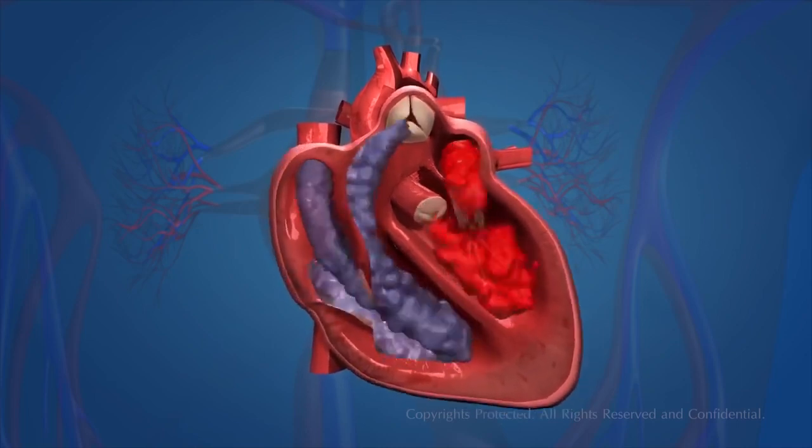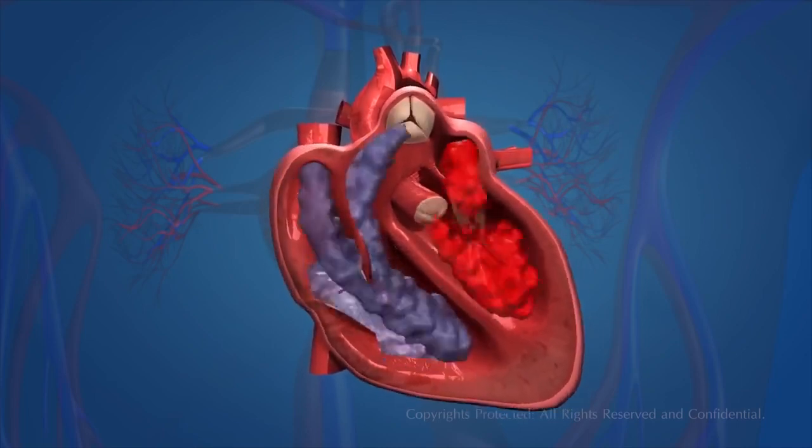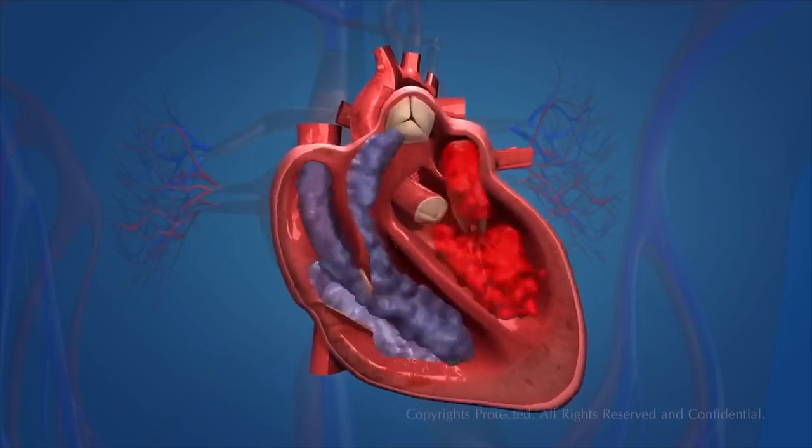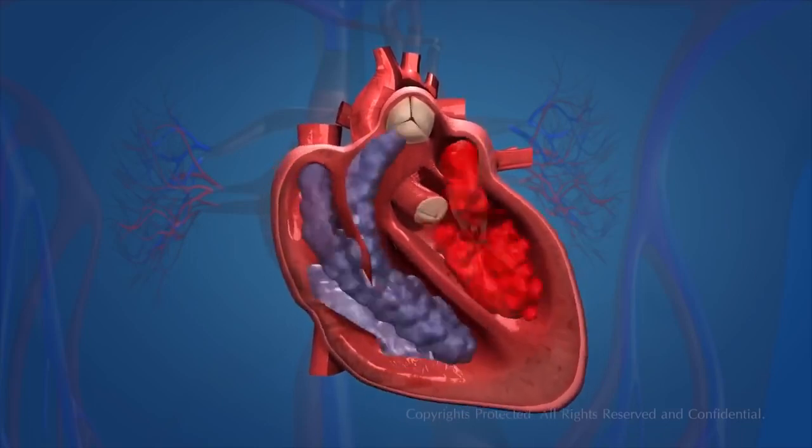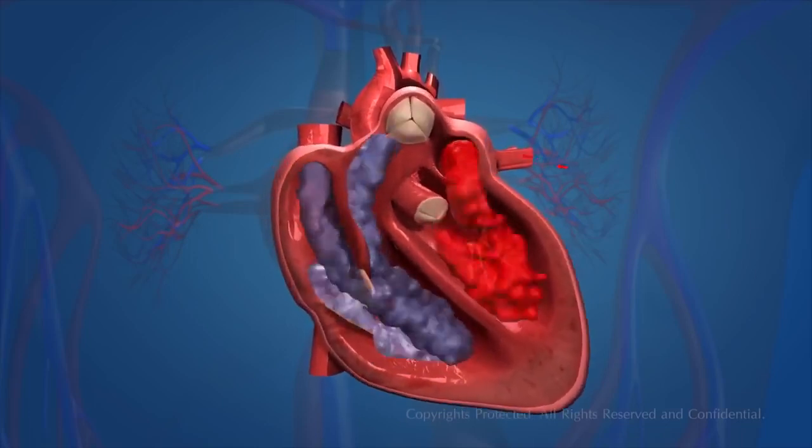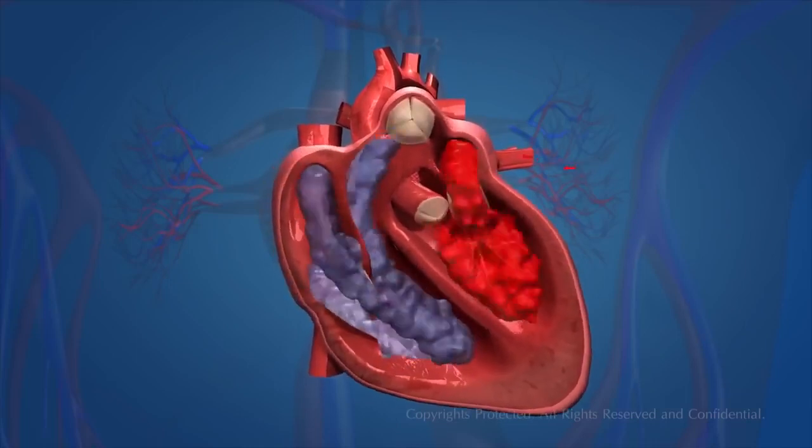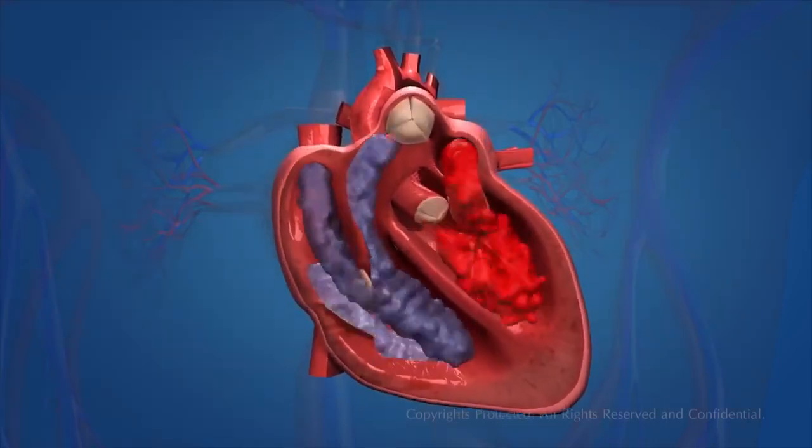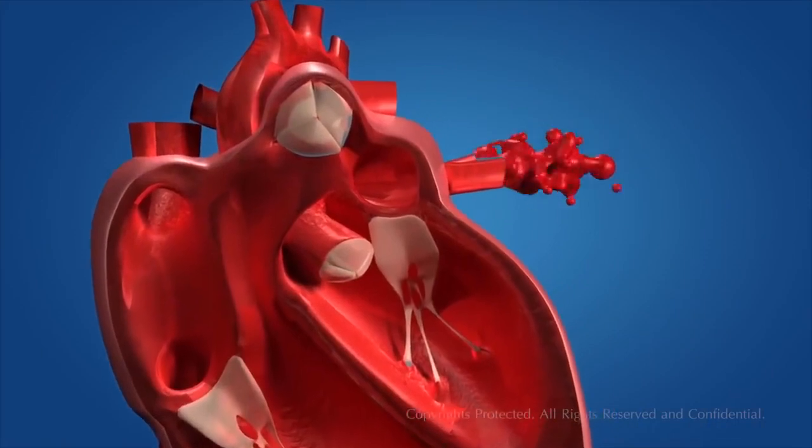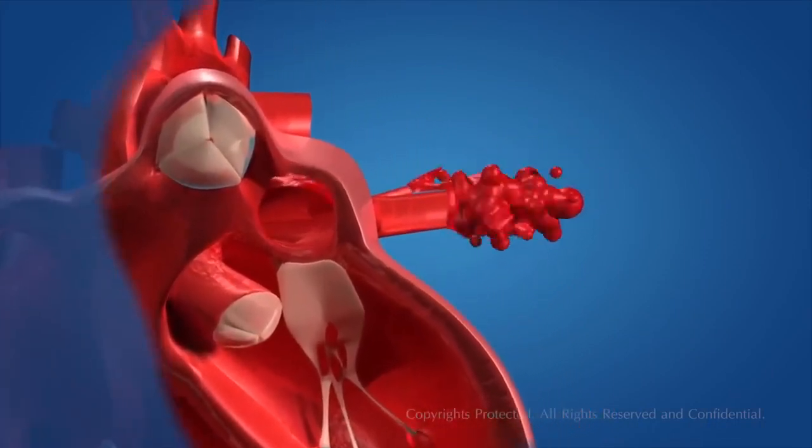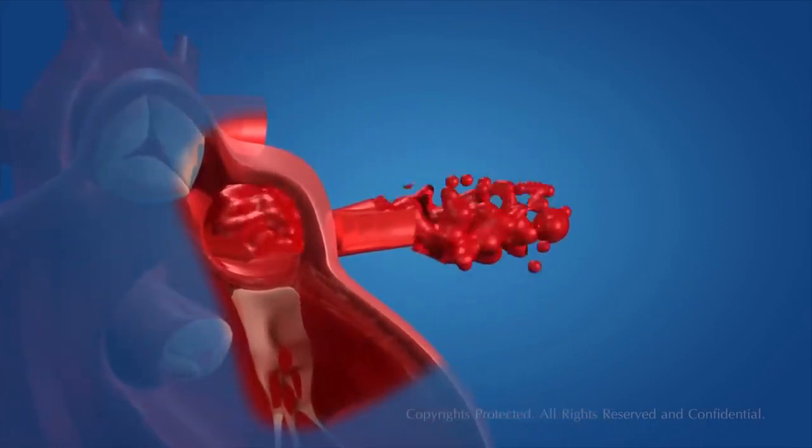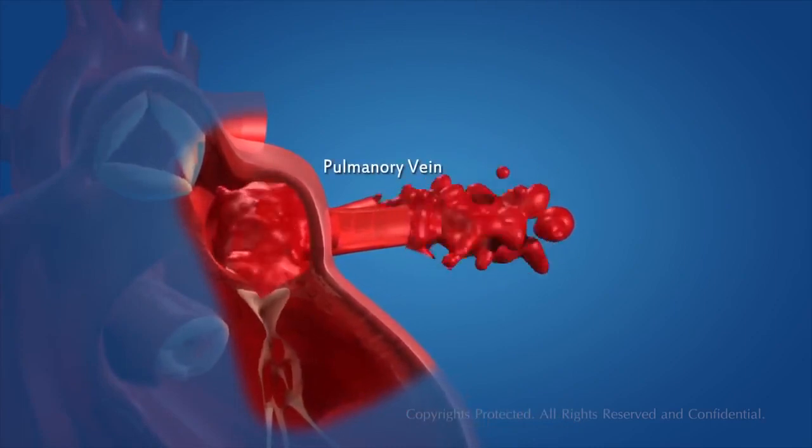Now you have seen the structure of the heart. Let us find out how it works. The blood becomes oxygen-rich by absorbing oxygen in the lungs. The function of the heart starts when oxygenated blood is carried from the lungs to the left atrium of the heart by means of the pulmonary veins.